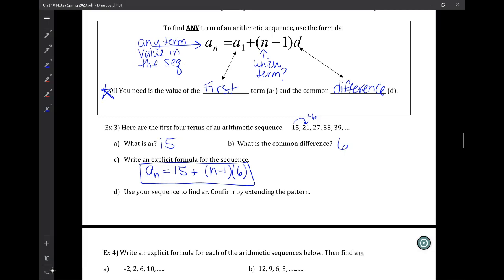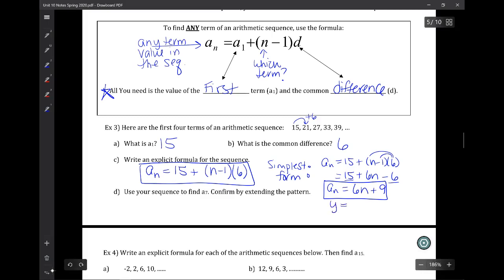Sometimes questions will ask for the explicit formula in simplest form. When they're talking about simplest form, that means we distribute that 6. We get 15 + 6n - 6, then combine like terms: a_n = 6n + 9. This looks like y = mx + b form. Remember, arithmetic sequences are very similar to lines.